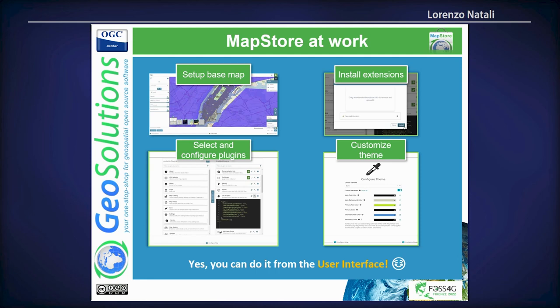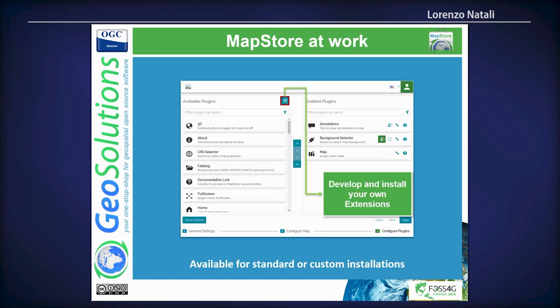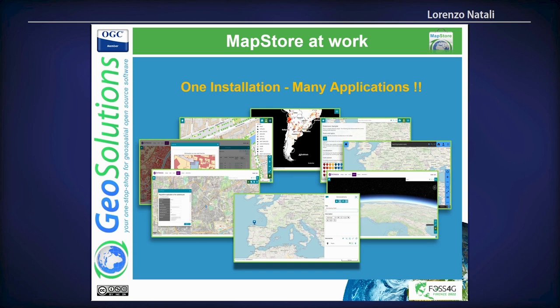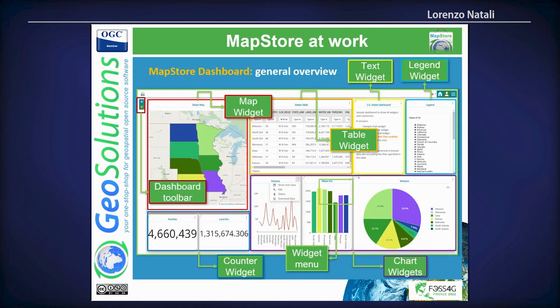You can customize the theme of the application context, and in a single installation you can have many applications and share application contexts with users just as you do with normal maps. For instance, you can have one viewer dedicated to citizens, one for the technical office, one for a particular office with a data-entry form, another viewer for field workers on mobile, and so on — all within a single installation.